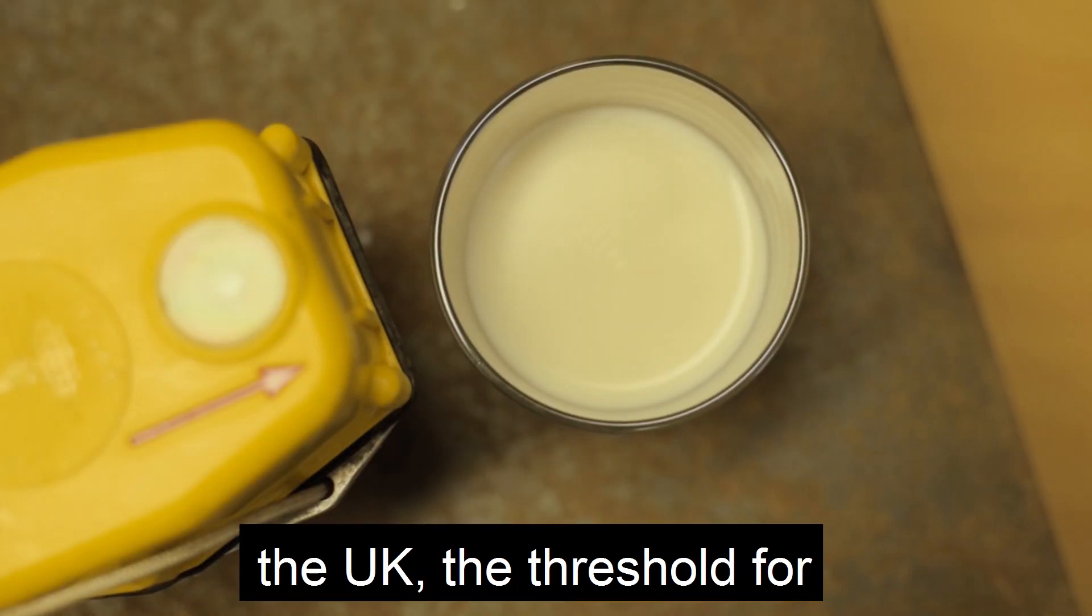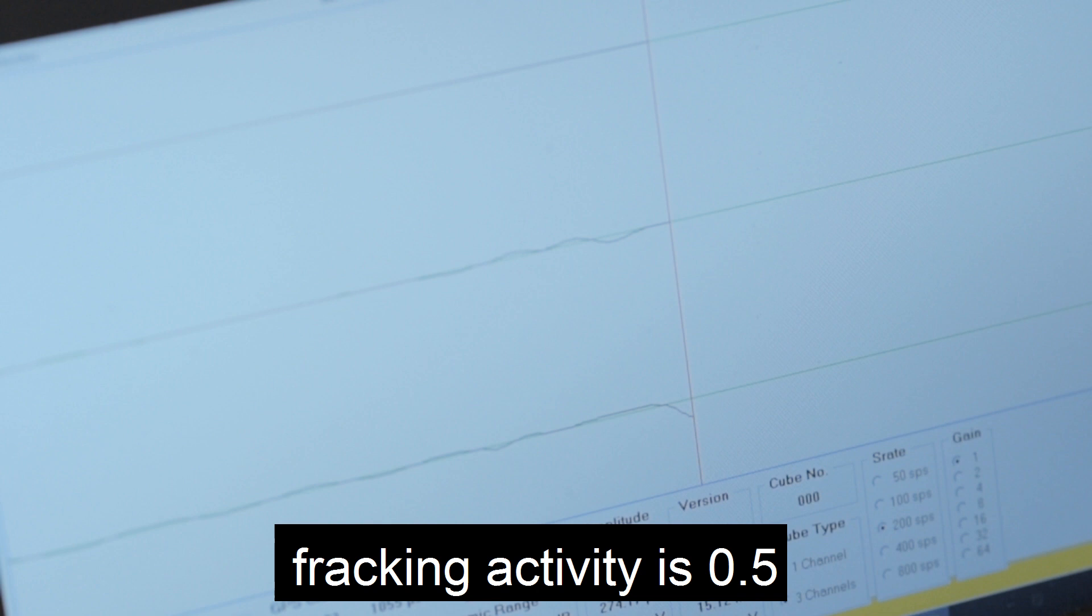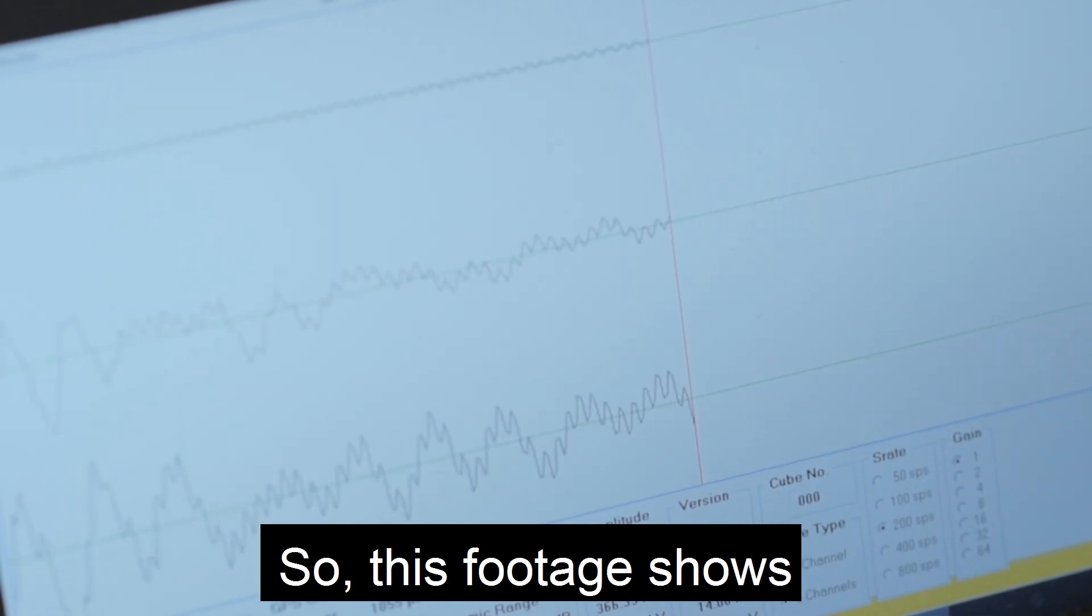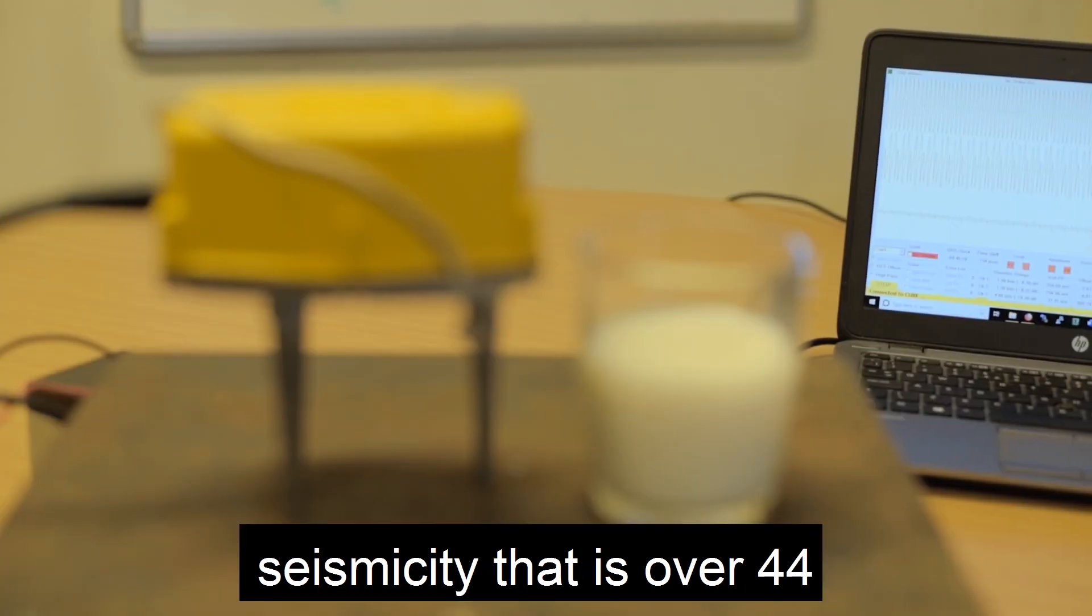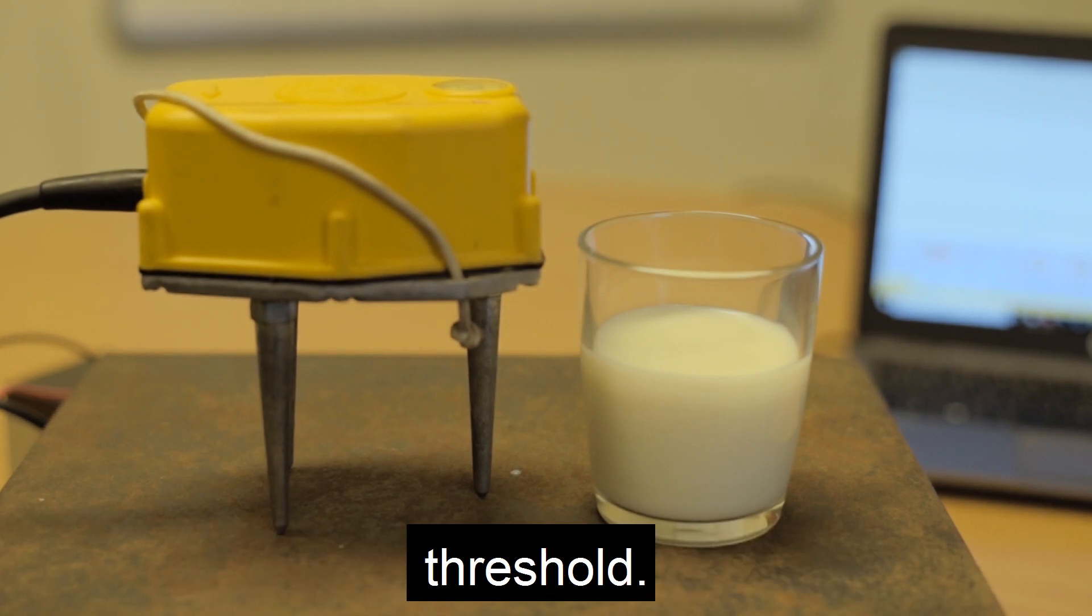For reference, currently in the UK the threshold for fracking activity is 0.5 on the Richter scale, so this footage shows seismicity that is over 44 times more powerful than that threshold.